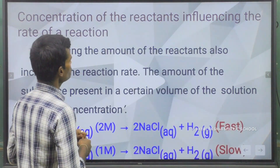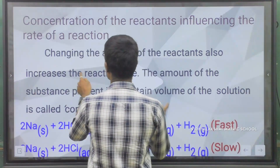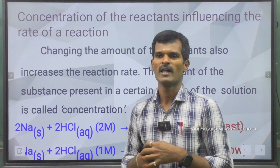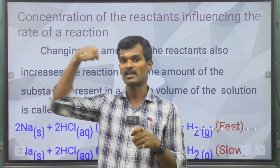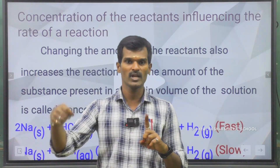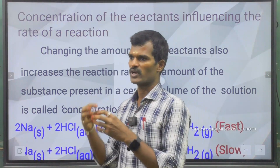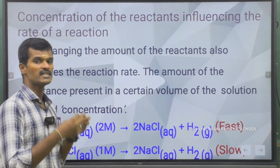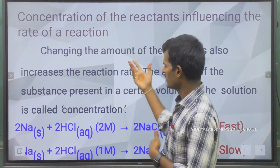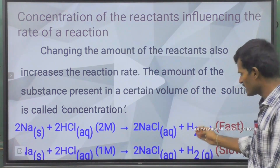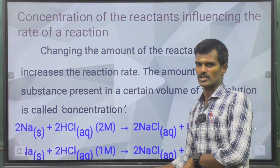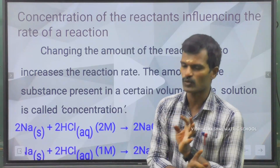Next, concentration of the reactant is based on the strength of the component. For example, one tumbler of 100 ml of water added with one teaspoon of sugar gives a sweet taste, whereas 100 ml of water added with four teaspoons of sugar gives a higher sweet taste. Similarly, one molar concentration of hydrochloric acid is less reactive compared with two molar concentration of hydrochloric acid, which has much greater reactivity.